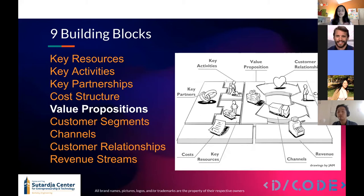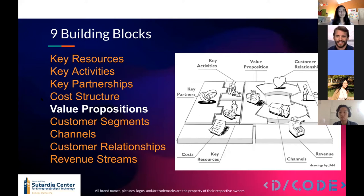Key resources talks about the most important assets required to make a business model work — for example, employees, software, raw materials, or finance. Key activities are the most important things a company must do, such as software development or manufacturing. Key partnerships are the network of suppliers and partners that make the business model work. Cost structure describes all costs incurred to operate, like rent, employee costs, or cost of production.